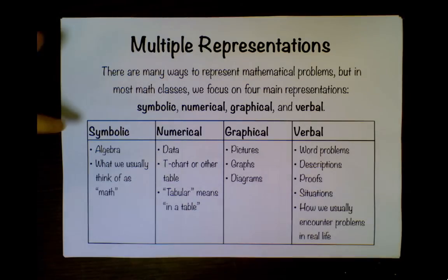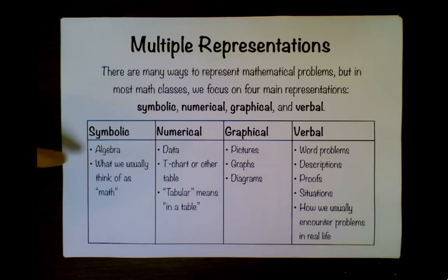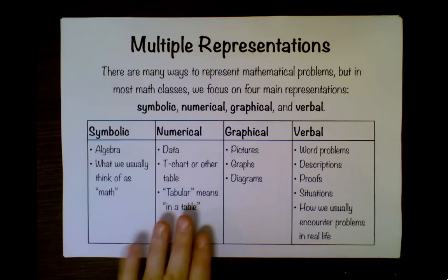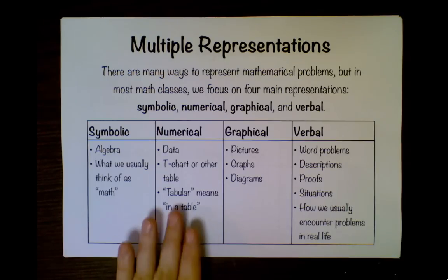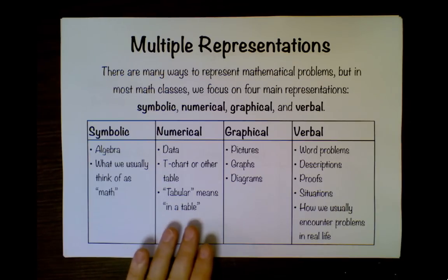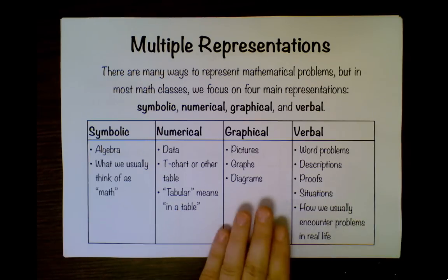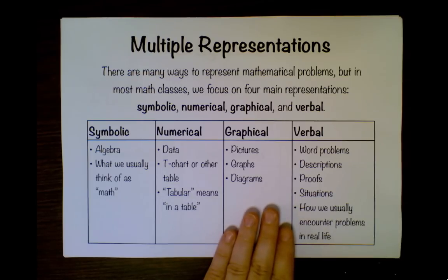Symbolic is algebraic, another word for it. It's what we usually think of as math. Numerical is data, maybe a list of points or a t-chart or other table. Sometimes people say tabular instead of numerical, and that just means in a table. There's graphical, which has pictures, graphs, diagrams. Sometimes a picture is worth a thousand words.